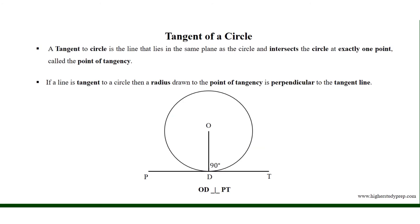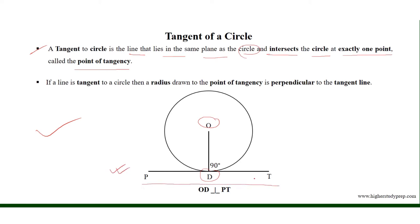Tangent of a circle: a tangent to a circle is a line that lies in the same plane as the circle and intersects the circle at exactly one point, called the point of tangency. For example, O is the center and D is the point of tangency for the tangent Pt. If a line is tangent to a circle, then the radius drawn to the point of tangency is perpendicular to the tangent line.